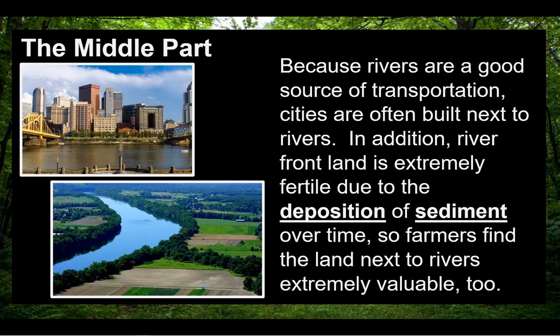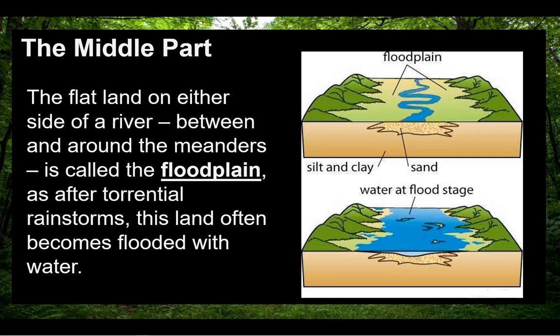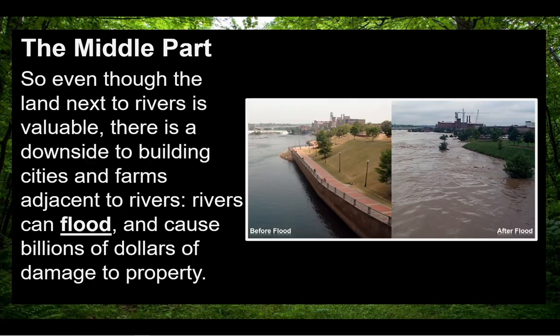Because rivers are a good source of transportation, cities are often built next to rivers. In addition, riverfront land is extremely fertile due to the deposition of sediment over time, so farmers find the land next to rivers extremely valuable. The flat land on either side of a river, between and around the meanders, is called the flood plain, as after torrential rainstorms this land often becomes flooded. So even though the land next to rivers is valuable, there's a downside: rivers can flood and cause billions of dollars of damage to property.